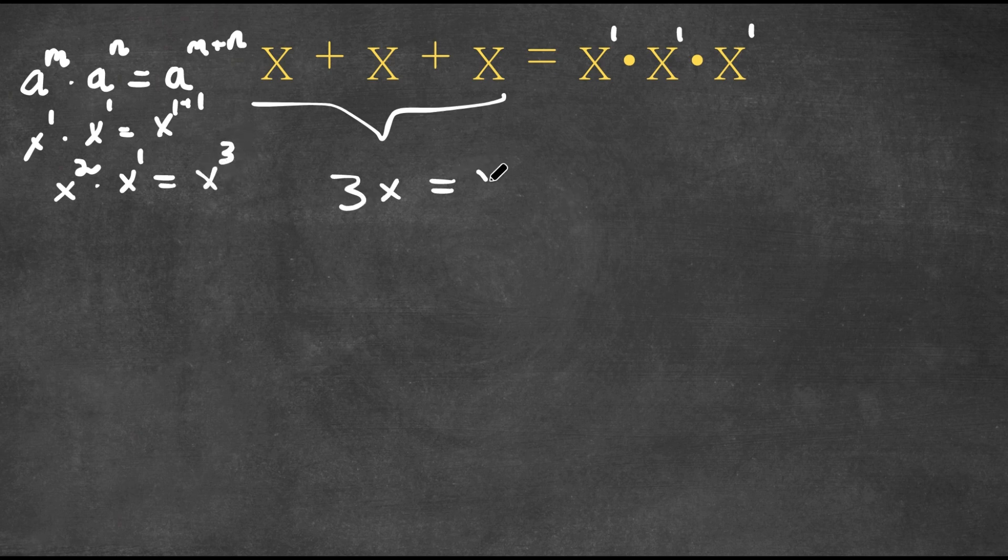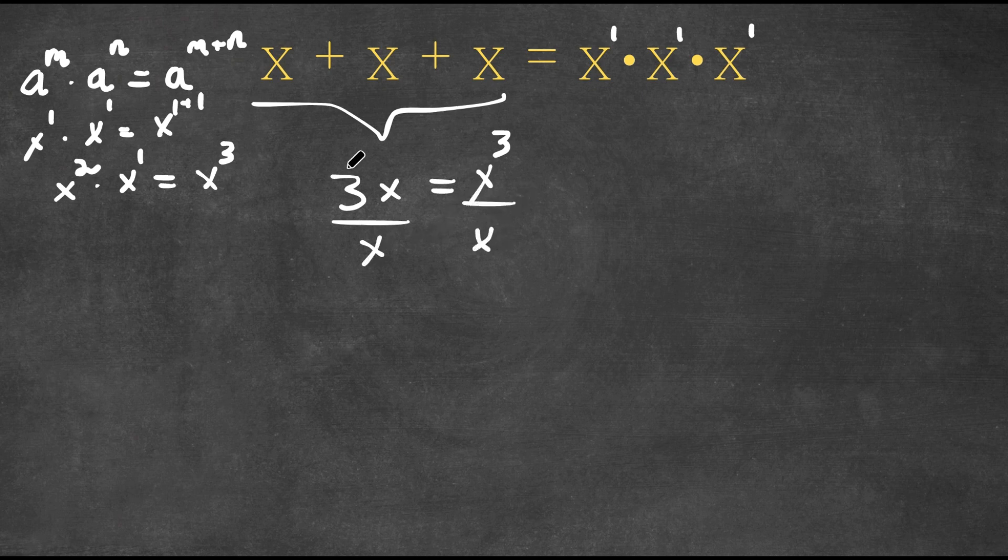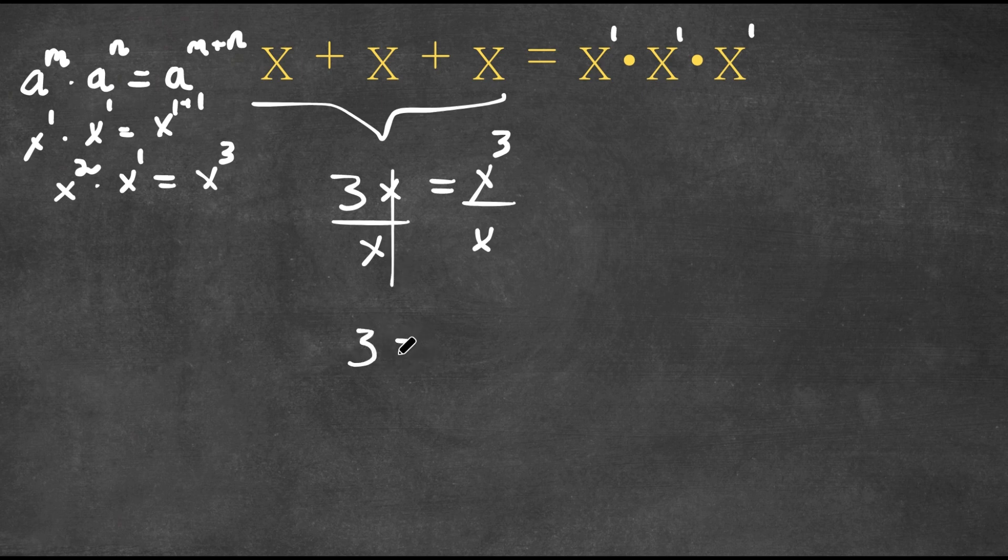So we have 3x is equal to x cubed. So now what we're going to do is I'm going to divide both sides by x. So for the left-hand side, these two would cancel out, so I'd simply just have 3 is equal to...